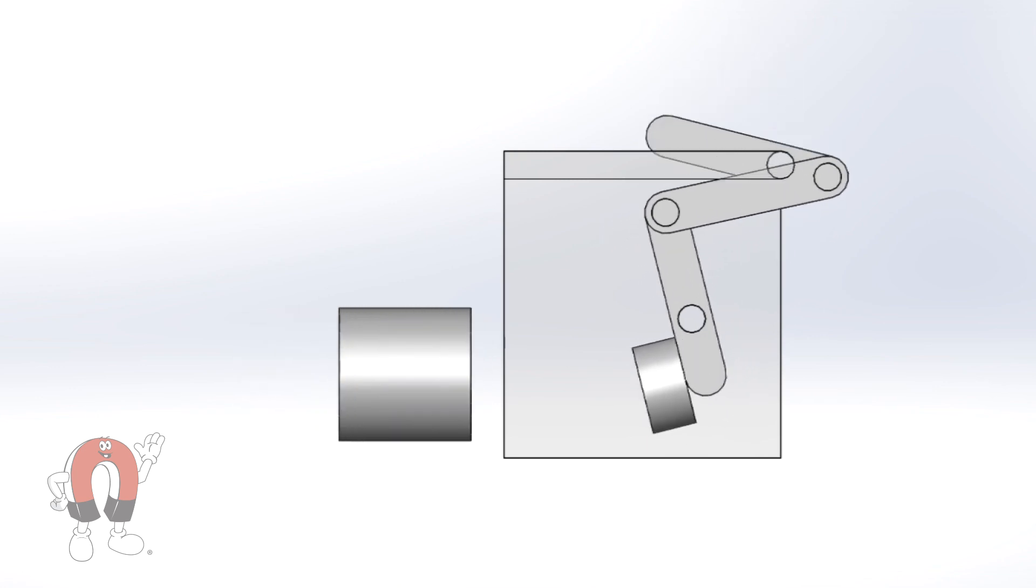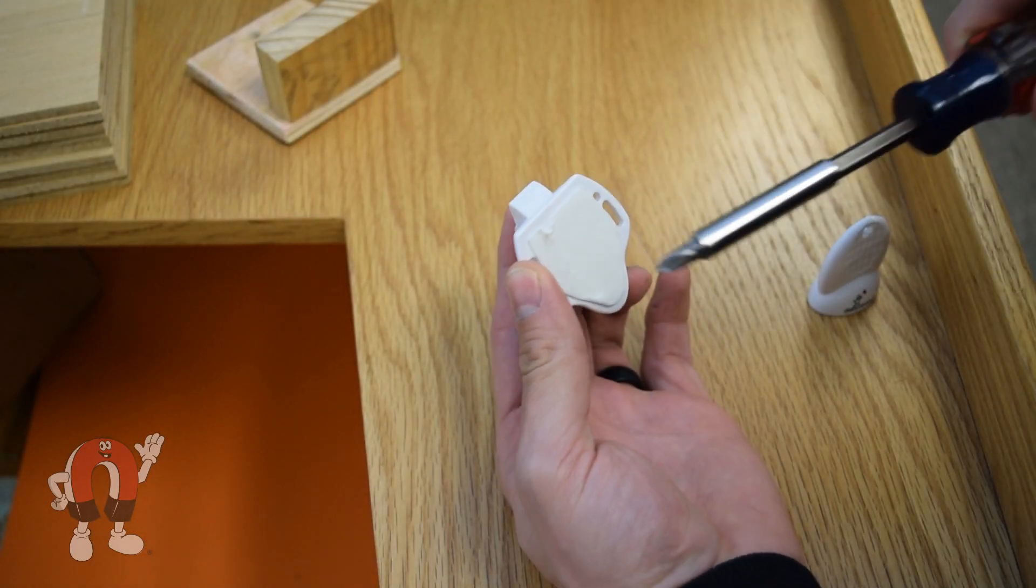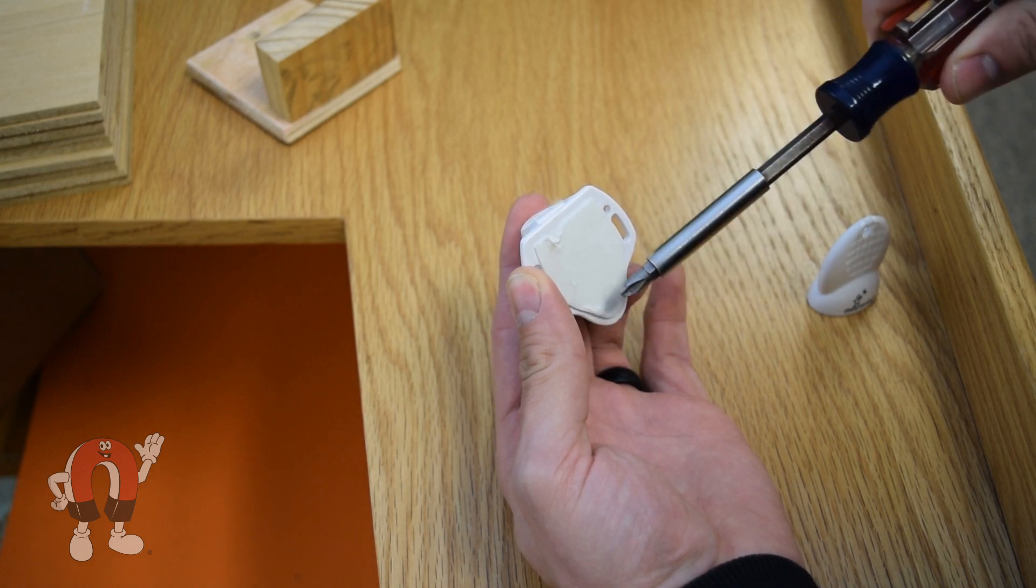When you remove the magnet, the spring bounces back to its original position. You can even use a piece of steel to open it since the internal magnet will attract to it.